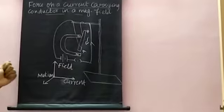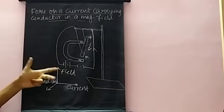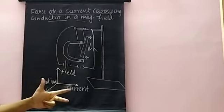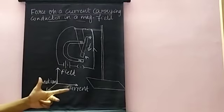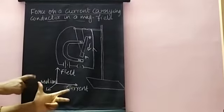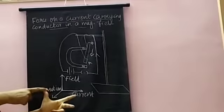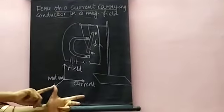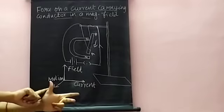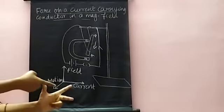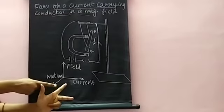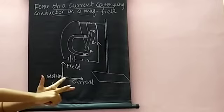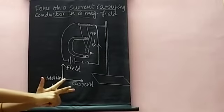For this rule, we must stretch our middle finger, thumb, and forefinger in a mutually perpendicular direction. The thumb finger denotes the direction of the magnetic force or the motion of the conductor. The forefinger denotes the direction of the magnetic field. The middle finger denotes the direction of the current.